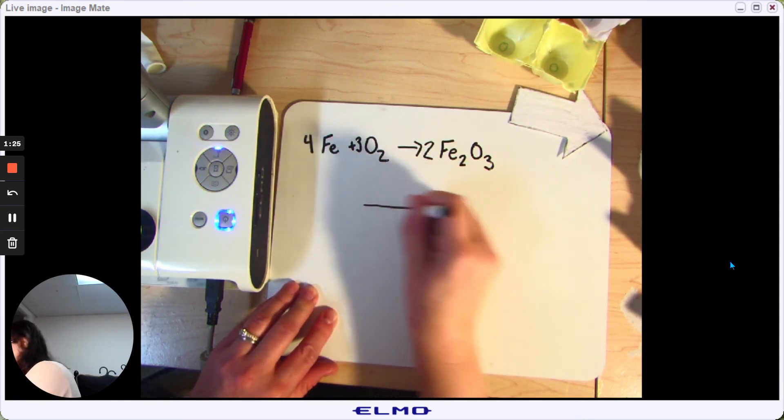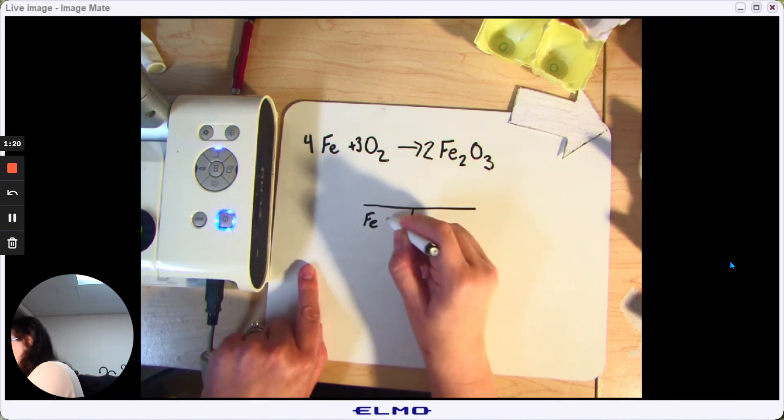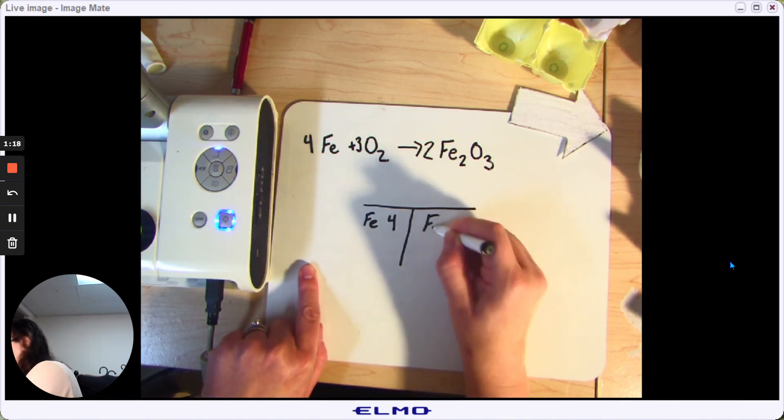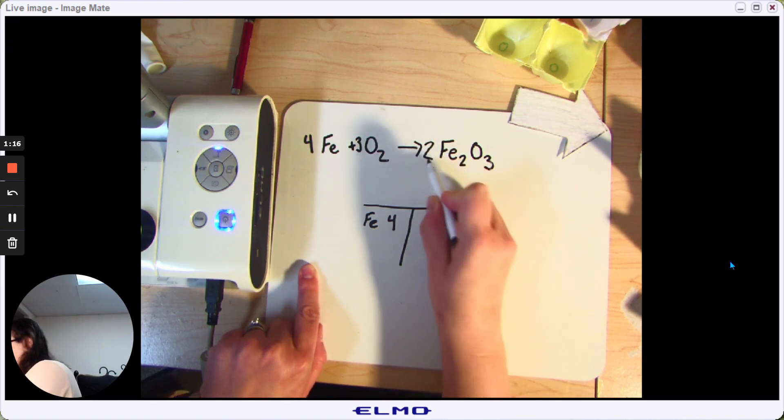And in a T-chart, you just go through and you say, well, let's see. Iron, over here we had four. Iron, over here we had two groups of two, so that's four.